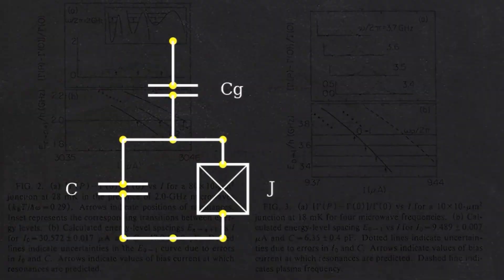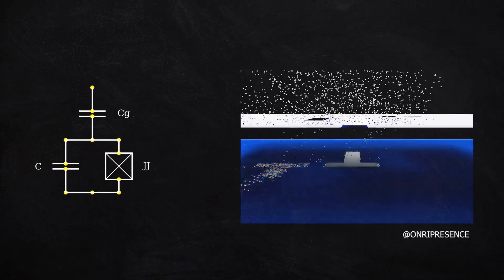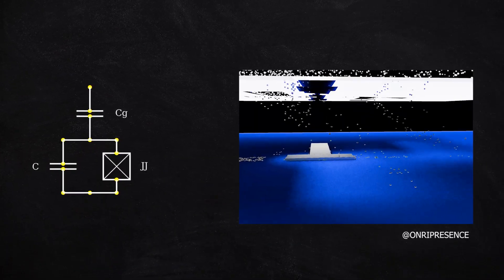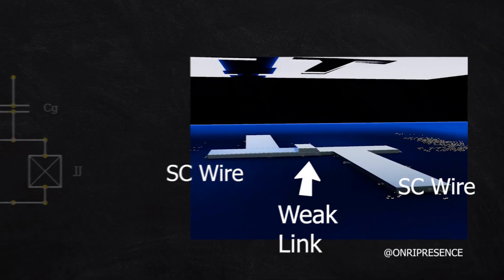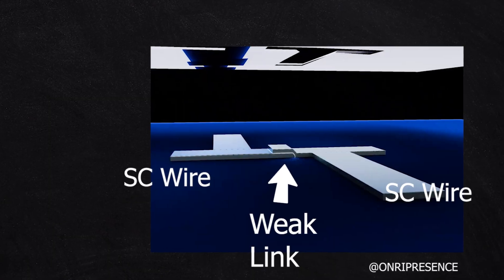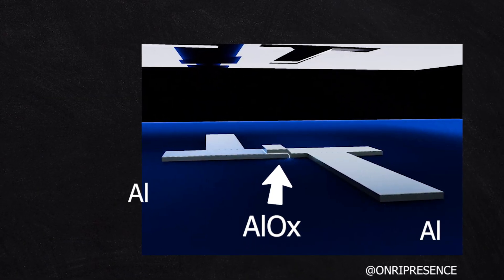You can think of a Josephson Junction as a superconductor sandwich. By taking two superconducting wires, which conduct electricity with zero resistance, and separating them by an insulating barrier, often called a weak link, one can make a Josephson Junction. Usually, this is done with aluminum as the superconductor and aluminum oxide as the insulator.